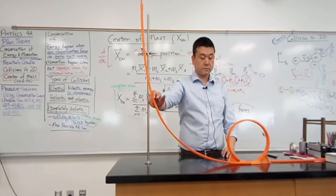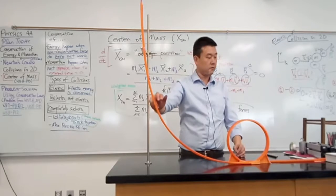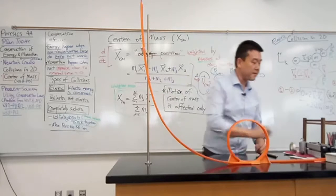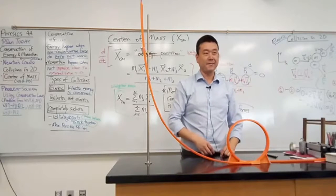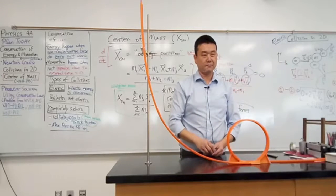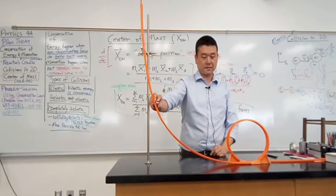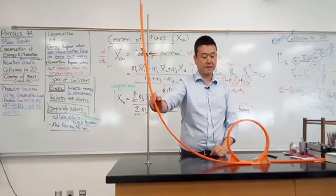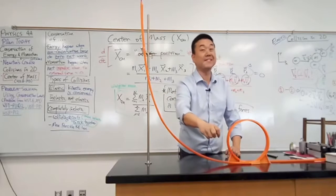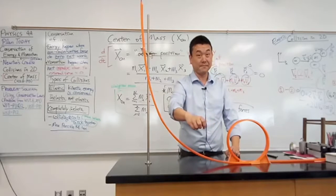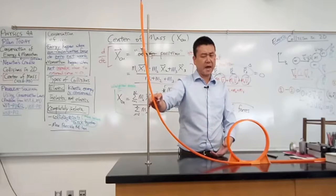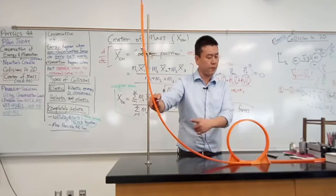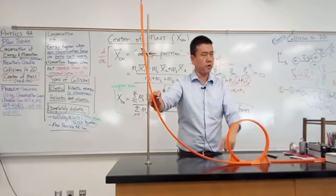It didn't quite do it. Let me do it again at about the same height. Yeah, I didn't get lucky this time either. So why was this not enough height for the ball to complete the loop? I already added a little bit of extra height for friction, so it shouldn't be friction — I tried to account for that.